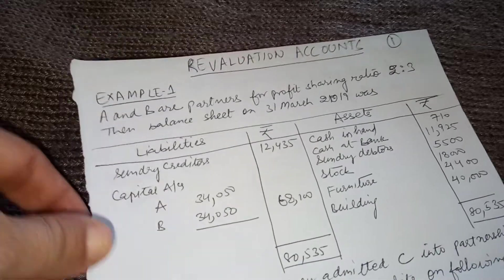Cash at bank is 11,925 — no change. Sundry debtors are 5,500 minus the provision for doubtful debts of 275. Stock is reduced by 10%. Building is appreciated by 15,000, so 40,000 plus 15,000 equals 55,000. Furniture is reduced by 10%, giving 3,960. On the liabilities side, sundry creditors are 12,435 and the capital account balances are entered. If the balance sheet tallies, the question is correct.